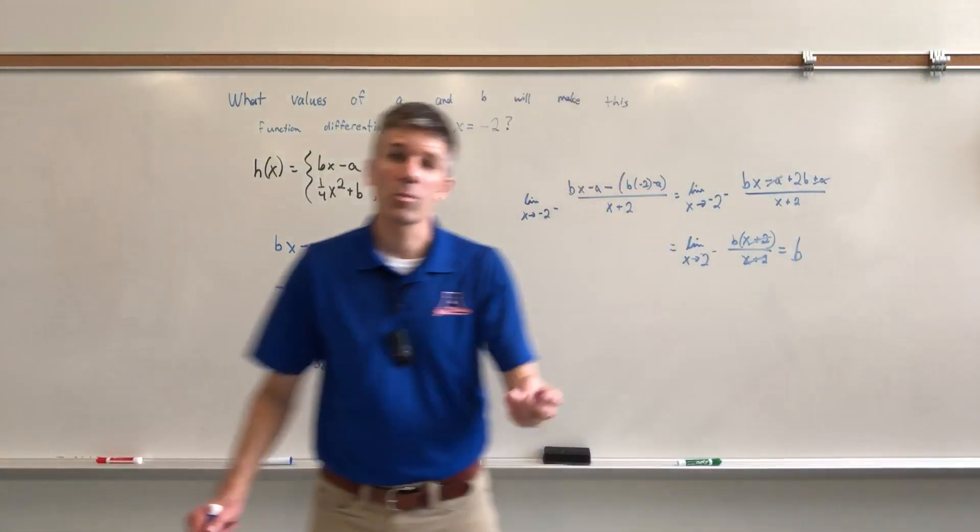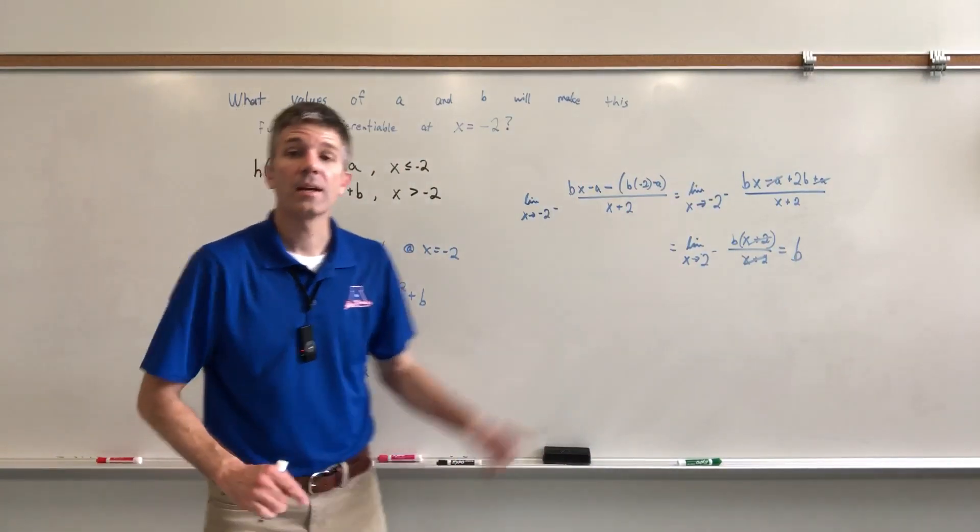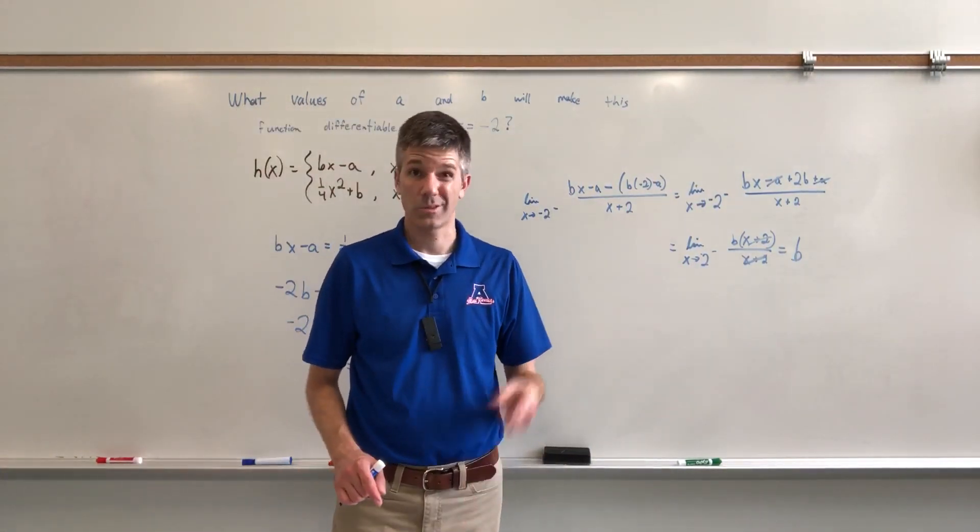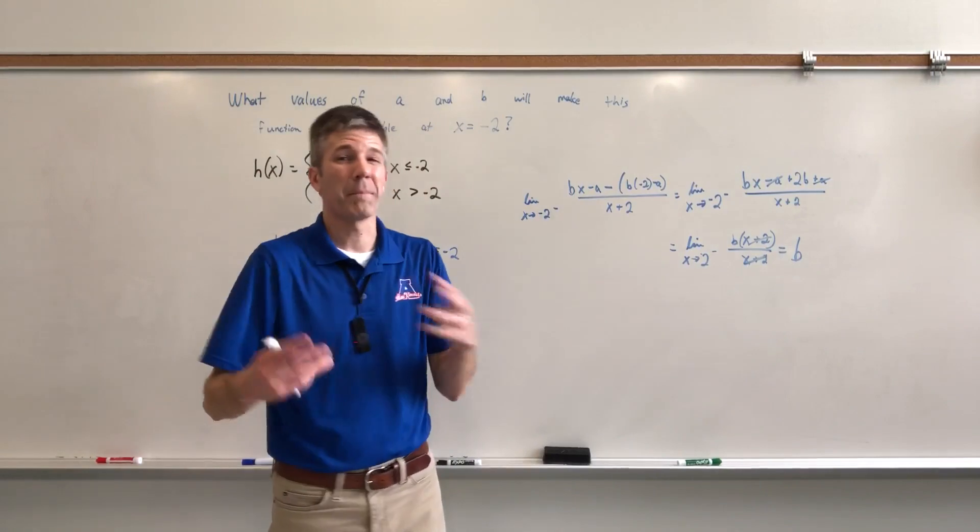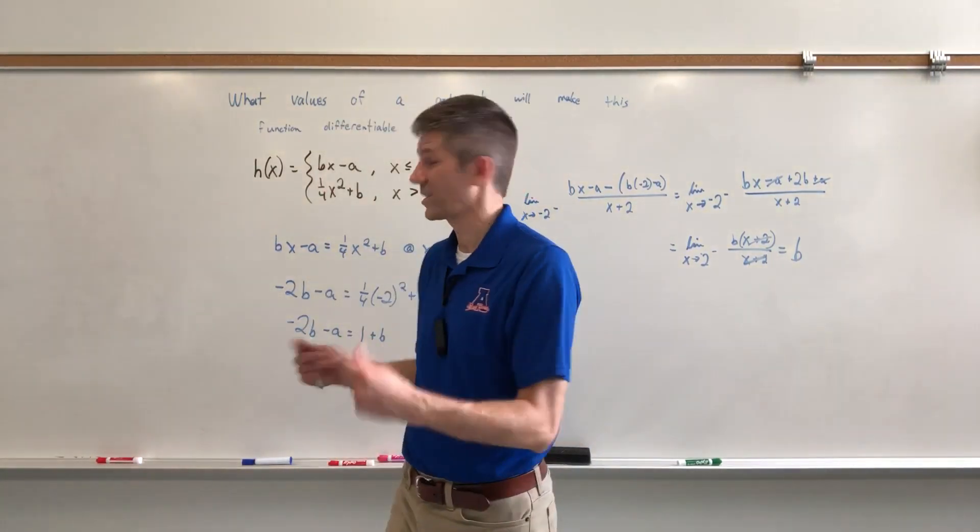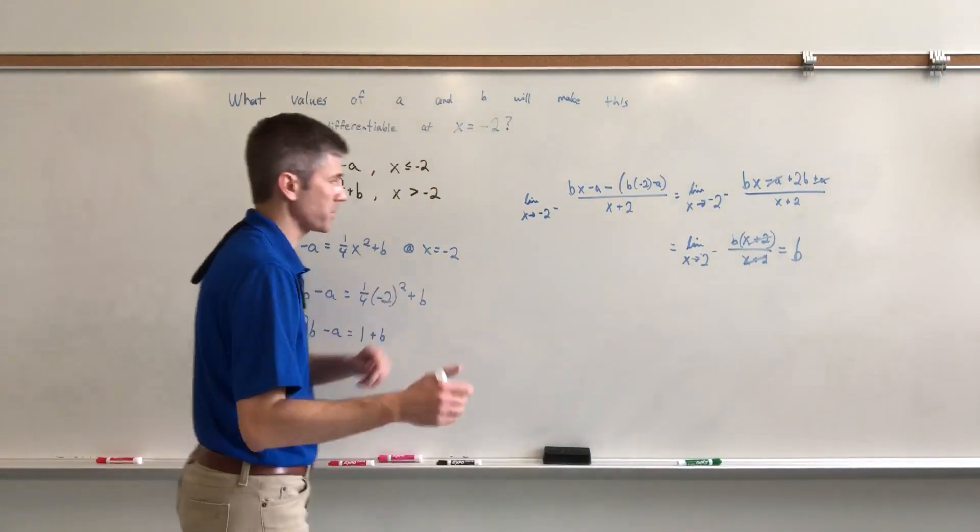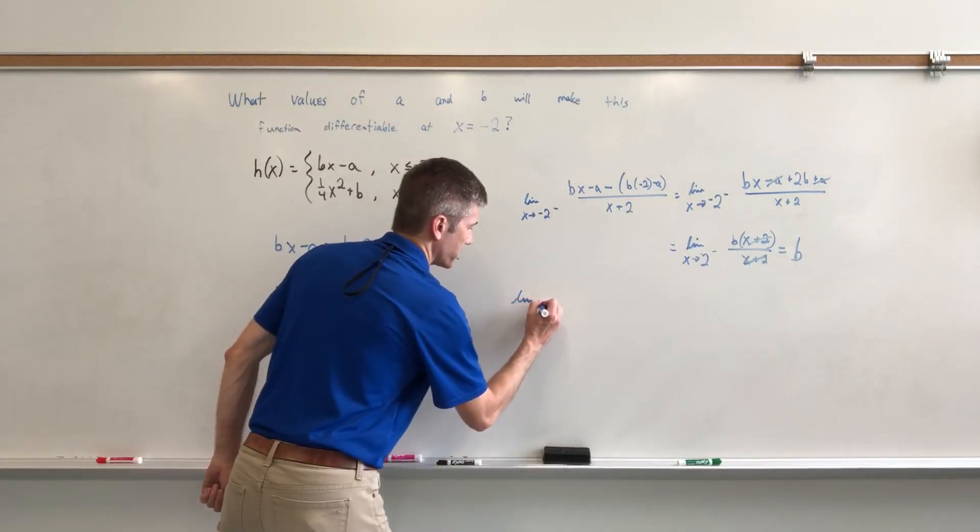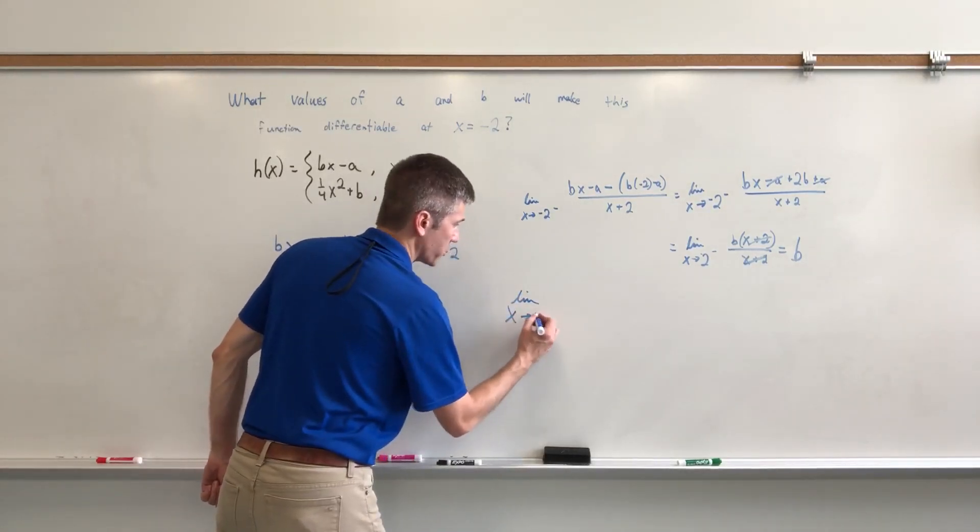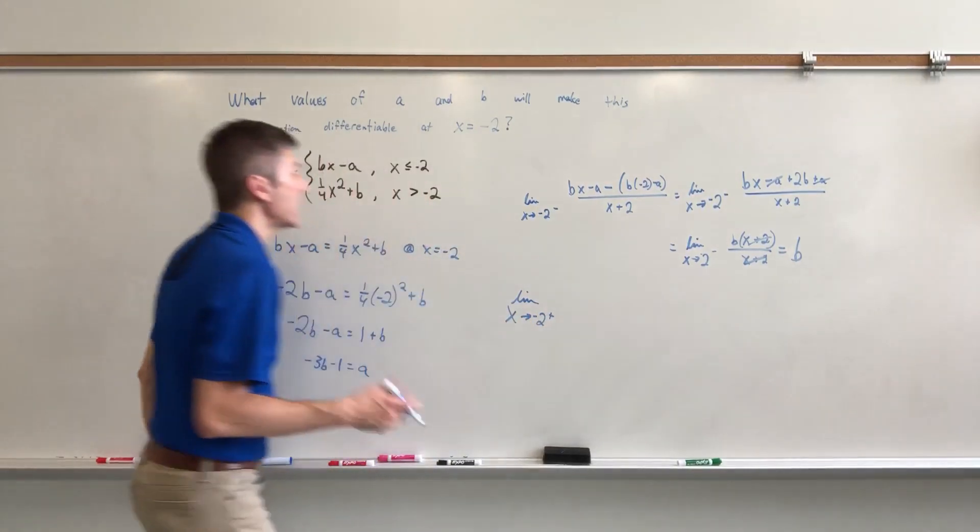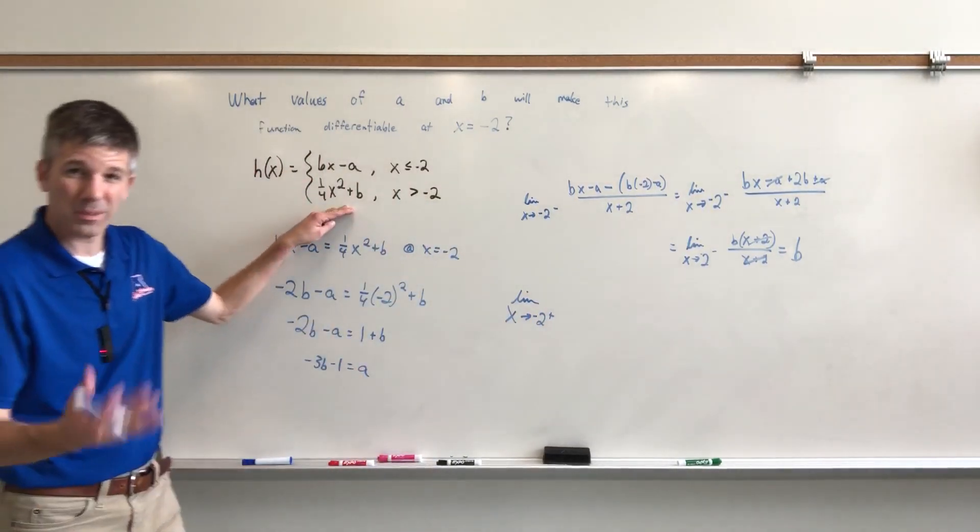Here's the deal. I need the slope from the left, which is B, to match the slope from the right, which better equal B. But it's probably not going to equal B, so we'll force it to equal B, and then we'll set them equal to each other. Trust me on this. Here goes. The limit as X approaches negative 2 from the right, and now we're going to do that with this one, and it's going to be a little bit more complicated.